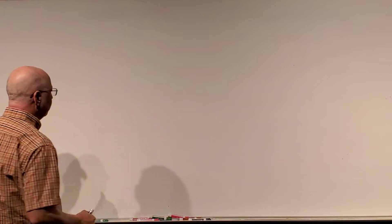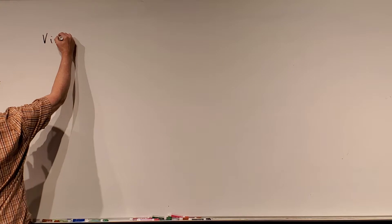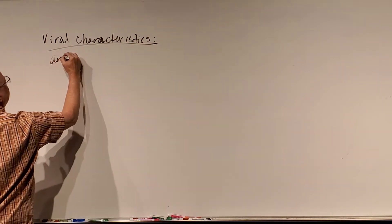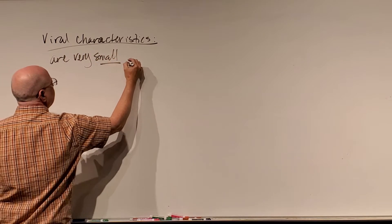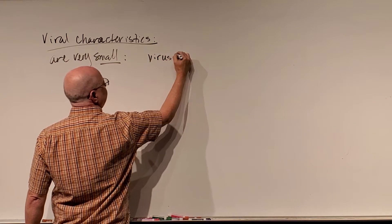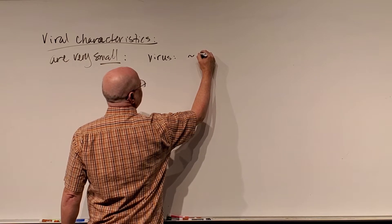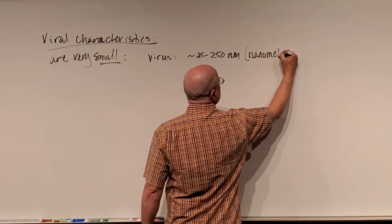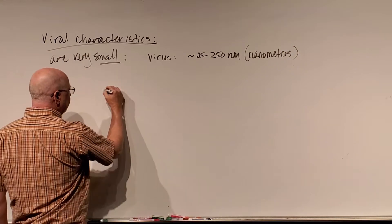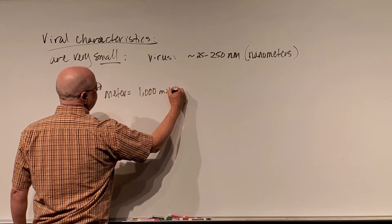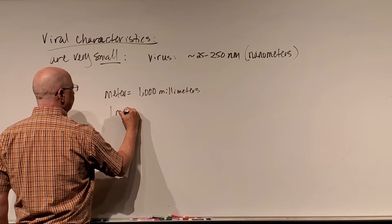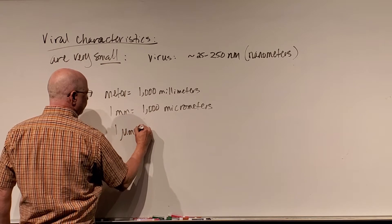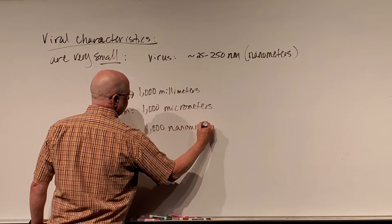When we look at viruses, some of the characteristics — not all of them, but a few — is that viruses are very small. For example, the average virus or viral particle, a single virion, is about somewhere between 25 to 250 nanometers (nm).